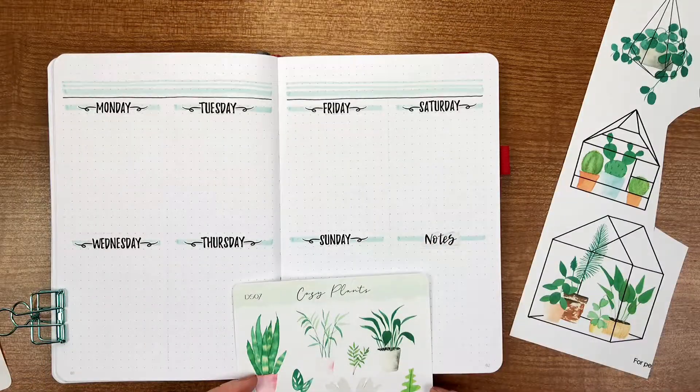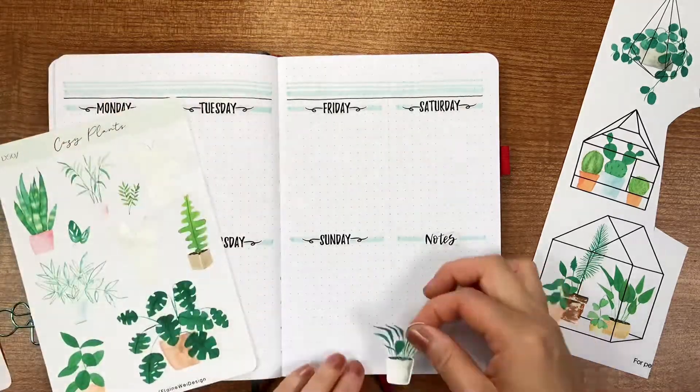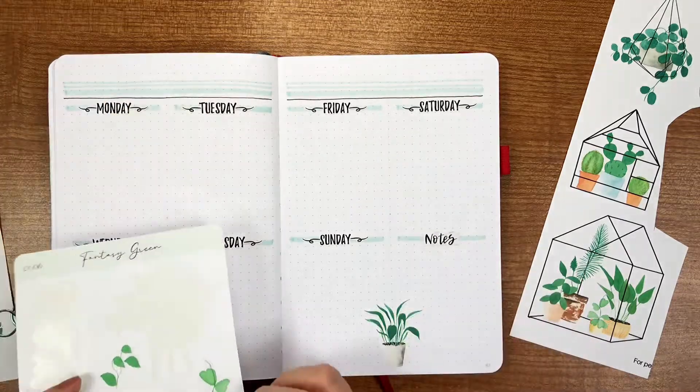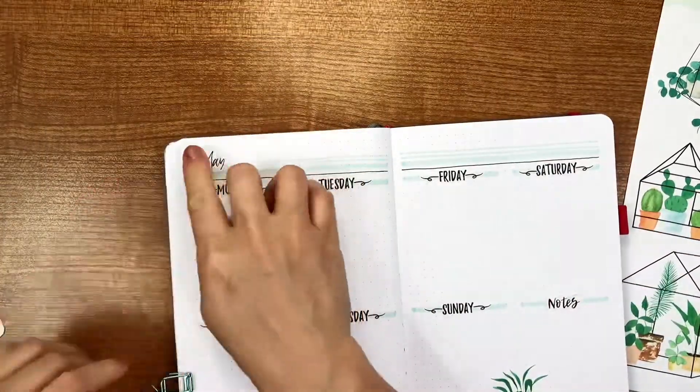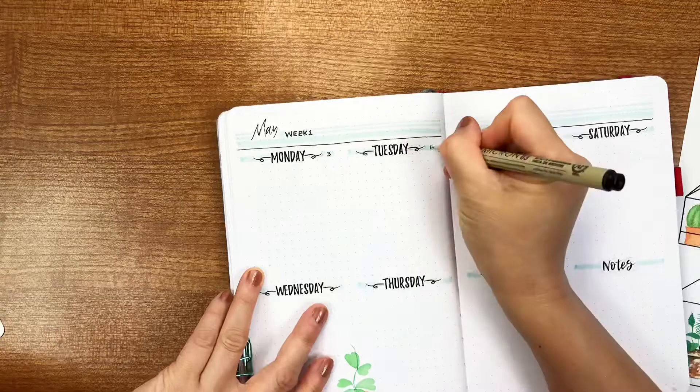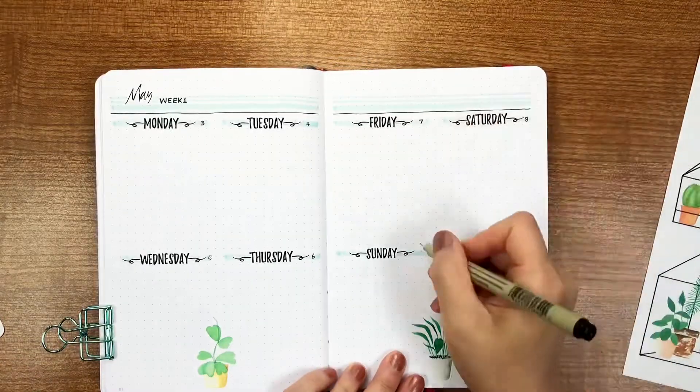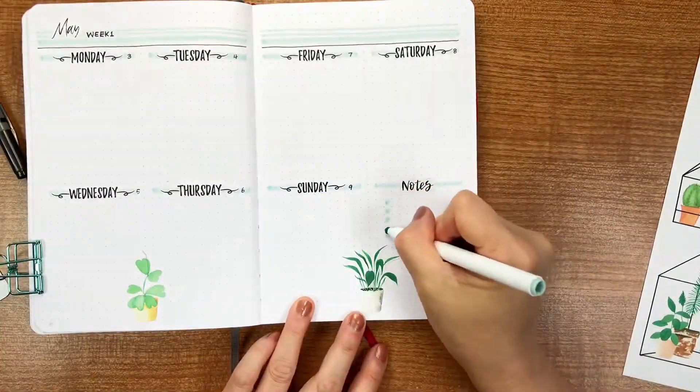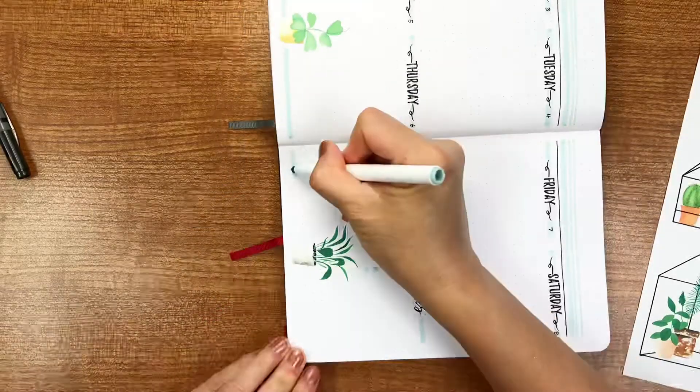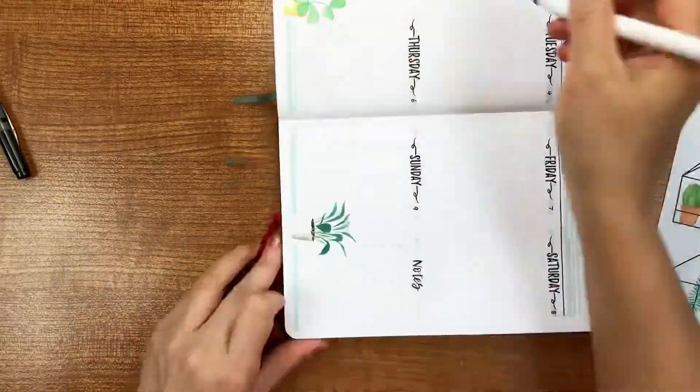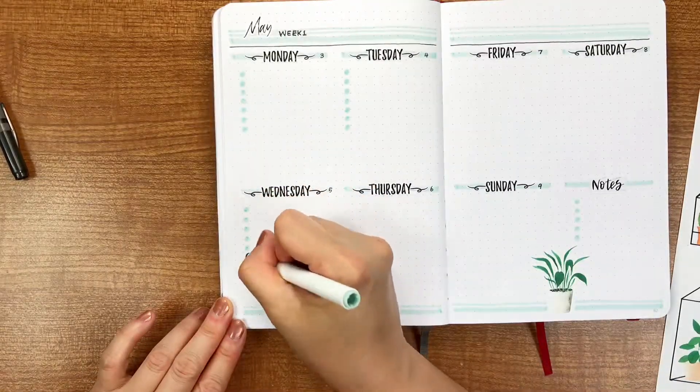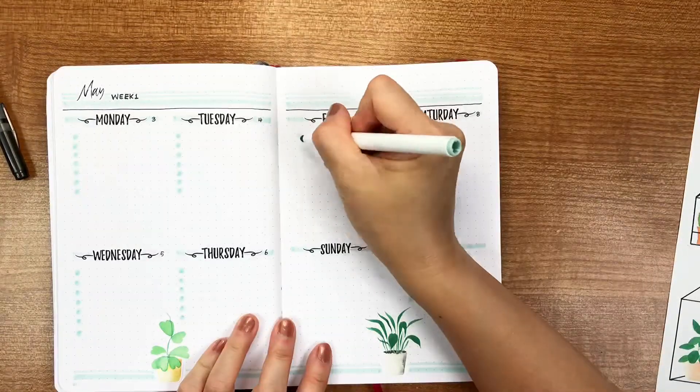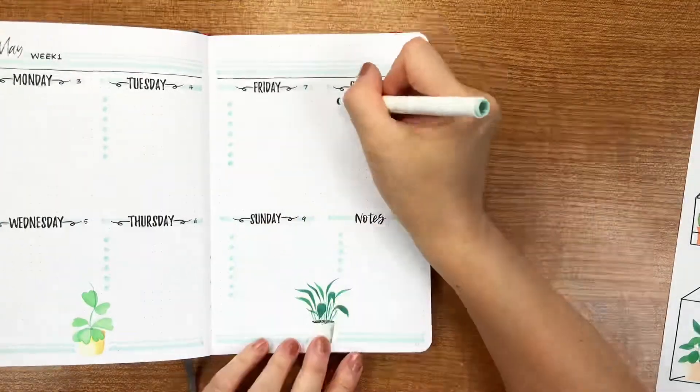Then I'm using two beautiful plant stickers from my cozy plant sticker sheet to decorate these pages. This month I used only light green as my main color. I really want to have a fresh and sleek design for the last month of spring for my planner.